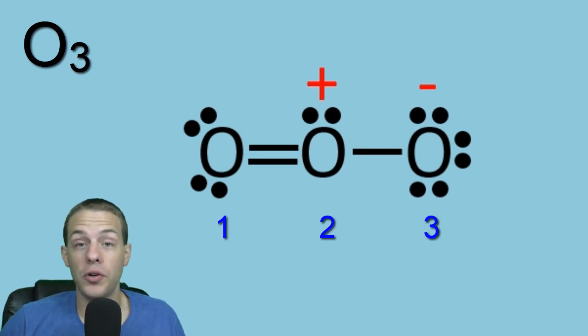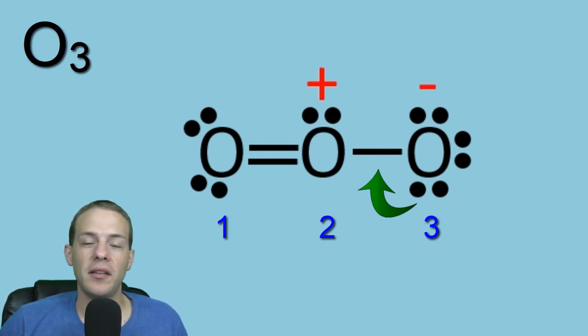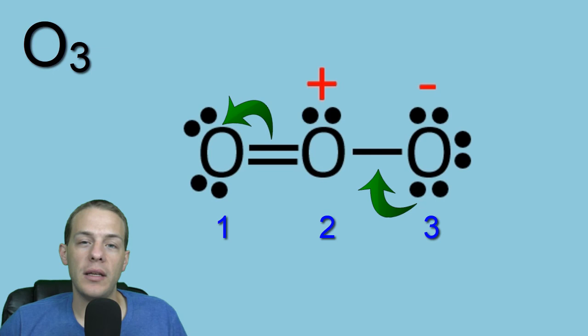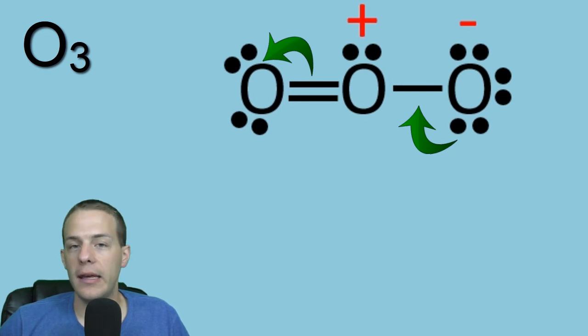Well, I mean, again, I encourage you to try it. So what if, for instance, we took one of the lone pairs on oxygen three and we moved that into the bonding region between oxygens two and three, that would give a double bond. And then what if simultaneously we took one of those pairs of pi electrons that belong to that double bond between oxygens one and two, and we moved that to oxygen one giving it another lone pair. Well, that would also give it a minus one charge and the resulting structure would look like this.